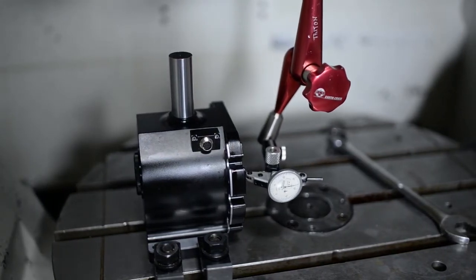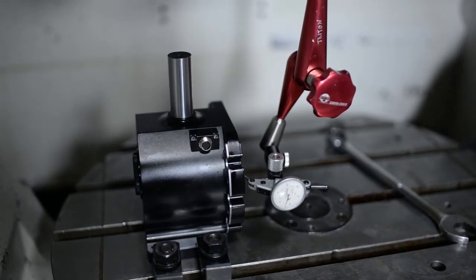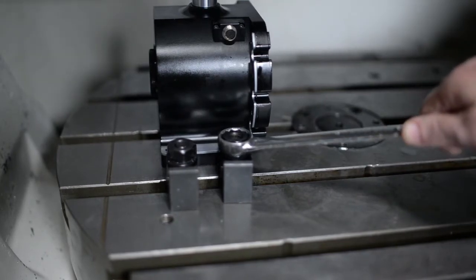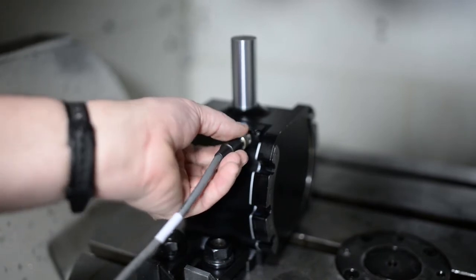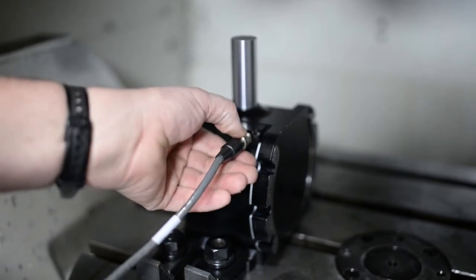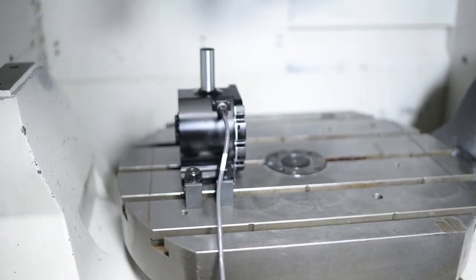Next use a dial indicator to ensure squareness. Once the swivel check is square, you can finish tightening it down to the bed. Now take the chance to connect all of your devices, and you're ready to measure your machine.